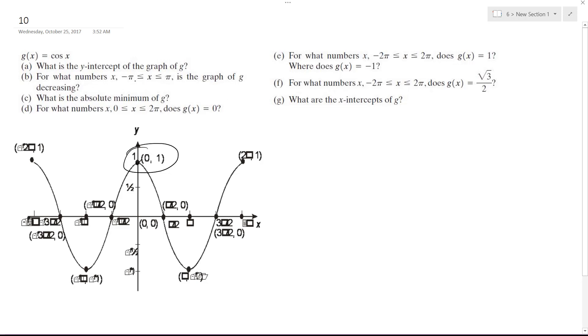For what numbers x from negative π to π is the graph g(x) decreasing? It's decreasing from zero to π. You can see here from zero and then down here to π.